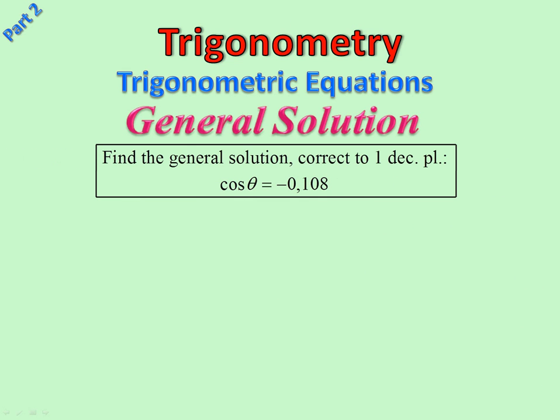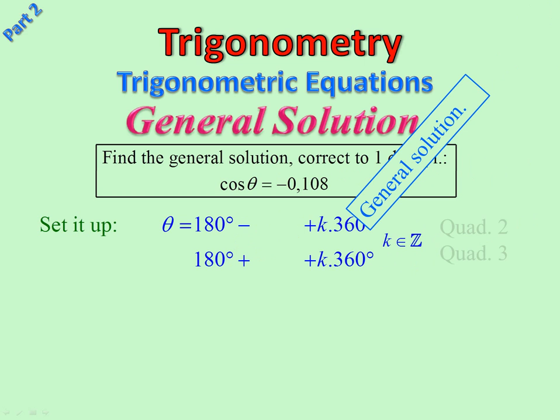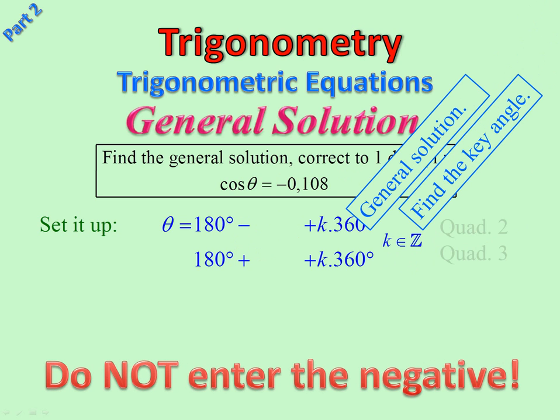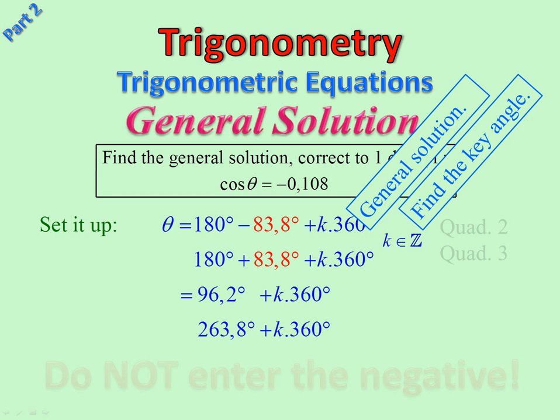Let's do another one. Cos equals negative. Well, that negative, there are two things. That means we need to decide what quadrants cos is negative in. And we must also remember that we don't enter that negative when we're finding the key angle. So, setting it up. Second, third quadrants. There we are. Second, third. 180 minus, 180 plus. That's where cos is negative. We are going to put in the general solution with the K element of Z. Now we're going to find key angle. But don't enter the negative. Don't enter the negative. Am I harping? I hope so. I hope you're sick of me saying so. There we are. 83.8. There are our answers. Don't enter the negative.